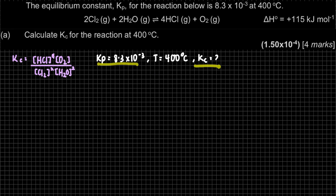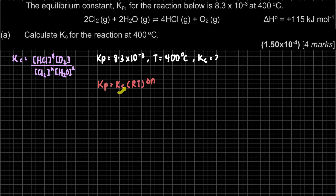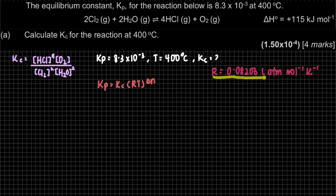They ask for Kc, so we have to use the formula — which you must memorize: Kp = Kc × (RT)^ΔN. Since we only have Kp, we use this formula to find Kc. Kp is given from the question; Kc is our unknown. R is our gas constant, R = 0.08206 L·atm/(mol·K). You can refer to your list of constants.